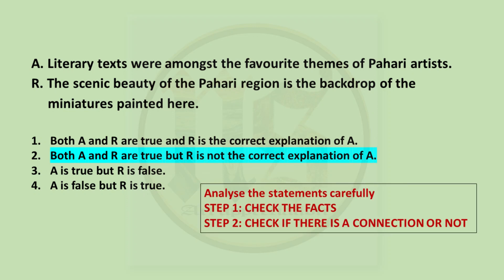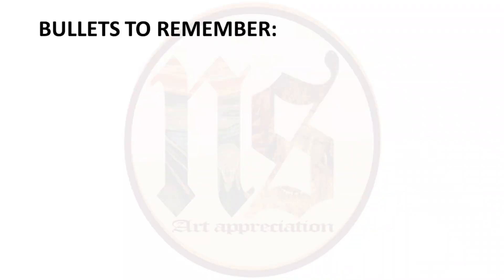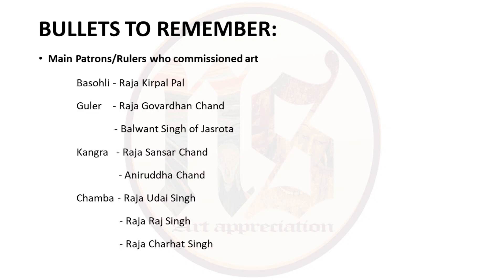Some important bullets to remember: For MCQs, note the main patrons — Basoli: Raja Kirpalpaar; Guler: Raja Govardhan Chand; Balwant Singh of Chasrota, under whom Nain Sukh worked; Kangra: Raja Sansar Chand, a great connoisseur who promoted art, and also Anirudh Chand; Chamba: Raja Uday Singh, Raja Raj Singh, and Raja Charat Singh. Just try to remember their names for MCQs.